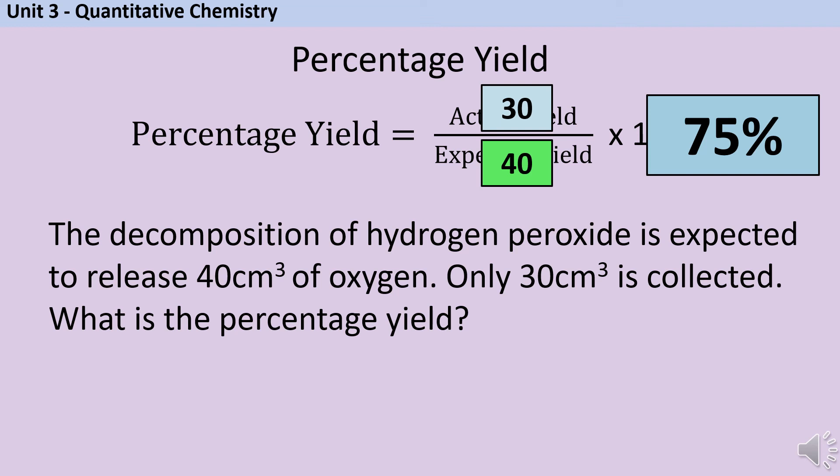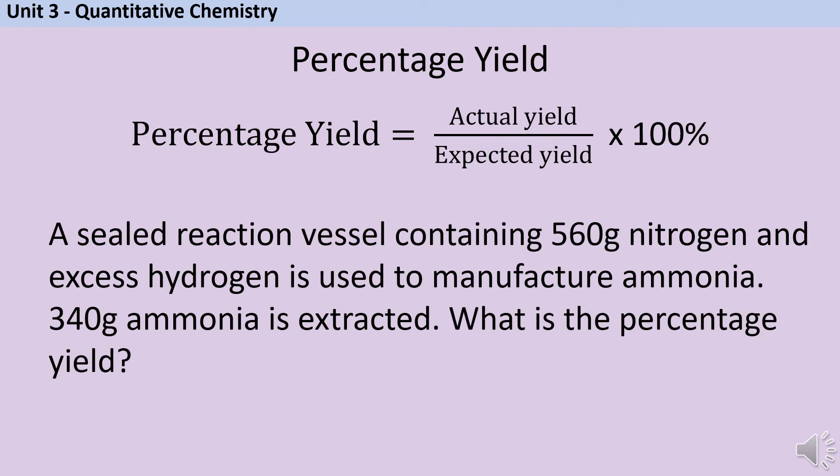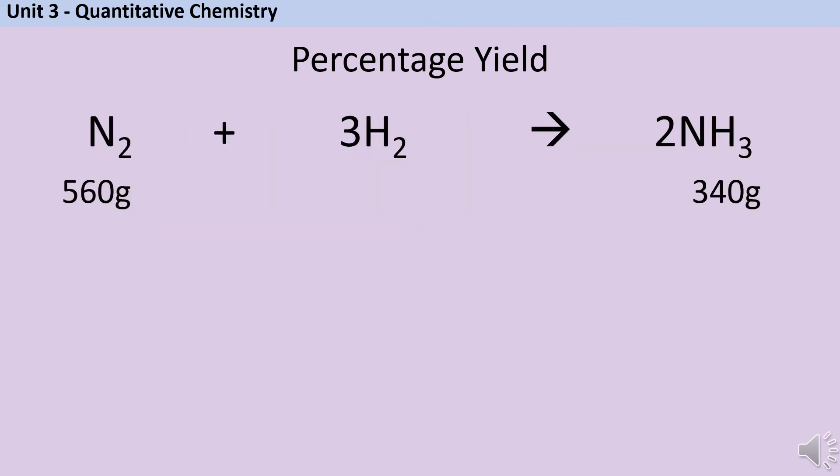On the other hand, you have ones like this. A sealed reaction vessel containing 560 grams of nitrogen and excess hydrogen is used to manufacture ammonia. 340 grams of ammonia is extracted. What is the percentage yield? So hopefully you know that excess just means too much. Basically what they're telling us is that there is enough hydrogen in there that all of that nitrogen will react. So first off, I need an equation. Each mole of nitrogen gas needs three moles of hydrogen gas to react with, and will make two moles of ammonia. I've started off with 560 grams of nitrogen and however much hydrogen it takes to make that, and then I've somehow ended up making 340 grams of ammonia, even though that's not quite as much as I expected. The first thing is I need to work out how much ammonia should I have made, and to do that I need to know how many moles of nitrogen have I got.